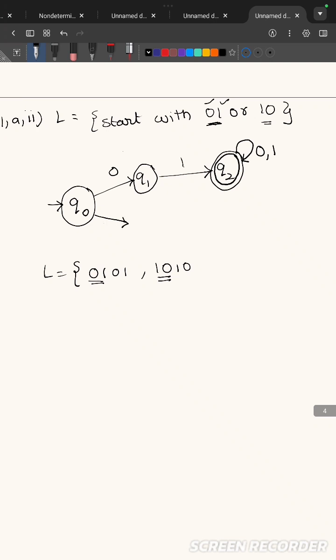Similarly, q0 on reading 1 will go to the state q3. If I am seeing a 0 here, that string also should be accepted by my DFA because 10 followed by any number of 1s or 0s.